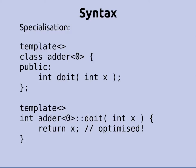So how does specialization work? At the moment we've got a class which can add 3 or 5 or whatever. But what if we wanted to do something special? If you're making an adder that adds 0, we can optimize in this case. To specialize, you have all the stuff we've already seen, and then you also have this: template with empty angle brackets means we're specializing and there are no template parameters left. So this is a concrete class, not a template anymore. Then class adder<0> says we're specializing for the case where you're making an adder and you passed in 0. In this case the doit method just returns x, because adding 0 is the same as returning x.